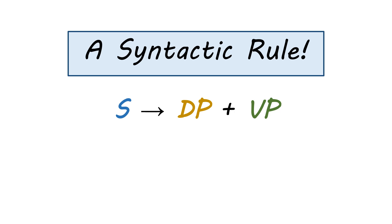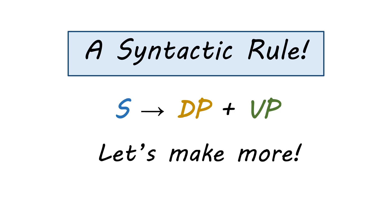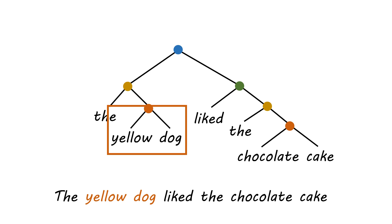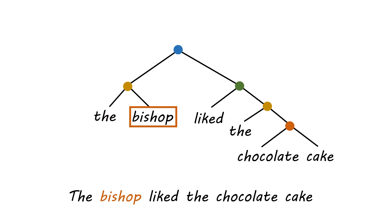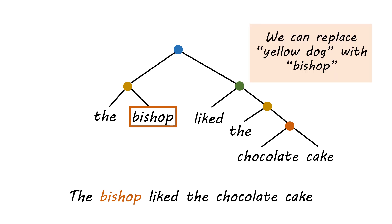We are going to make a few more rules by identifying more syntactic categories. Let's look at what can go in the orange box - what can go within "the yellow dog" itself. Unlike the gold box DP slot, in this orange box slot we can put the word "bishop" by itself - "the bishop liked the chocolate cake" is completely acceptable. So we can replace "yellow dog" with "bishop," but we can't replace "the yellow dog" with "bishop" - so they're of the same syntactic category at this level.